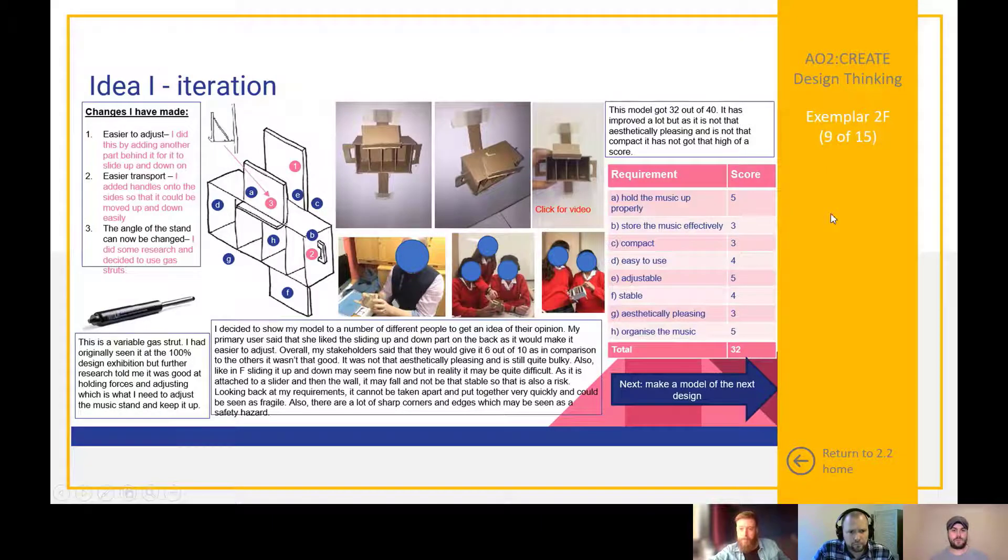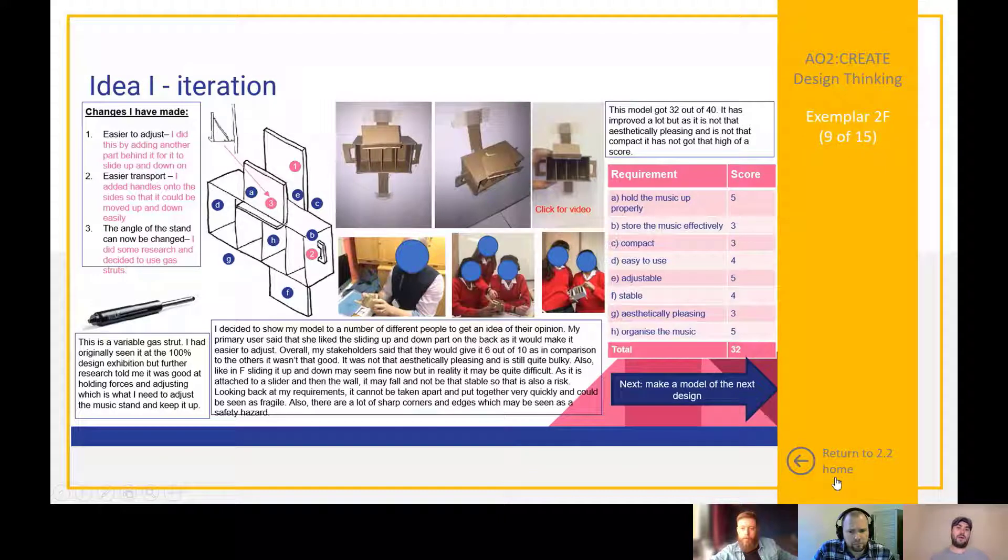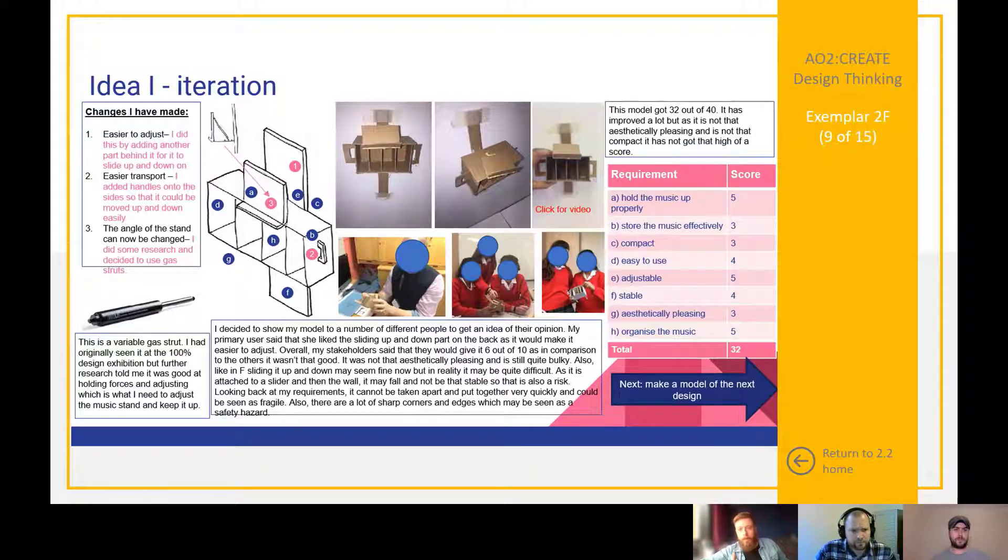There's a really nice mixture there, a blend of written work, of tables, of sketch work, models, and of course photographic evidence that the stakeholder has actually interacted with this product. That's what we want, this sort of rich media to tell the story, essentially. If you look at the quality of the prototype, for example on this slide, there's nothing amazing about them because they don't need to be at this stage. It's about being quick, just being able to communicate that idea in a three-dimensional form to somebody else. We shouldn't be spending lesson upon lesson on one prototype. We should be able to make a few prototypes in a single lesson.